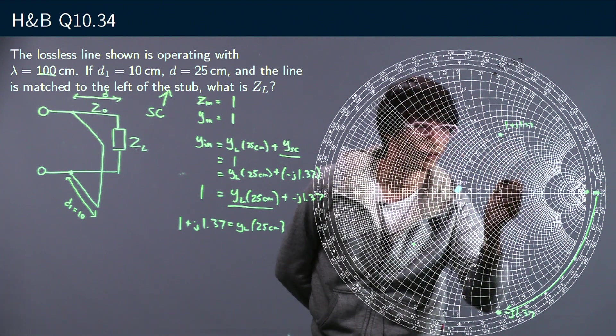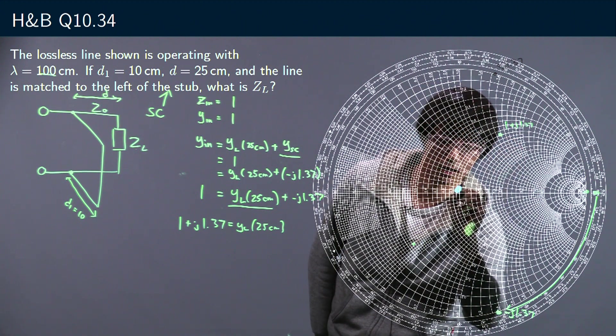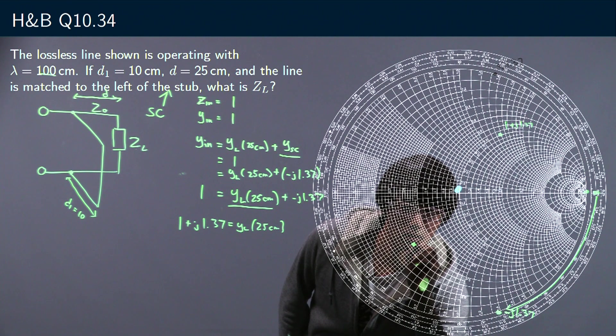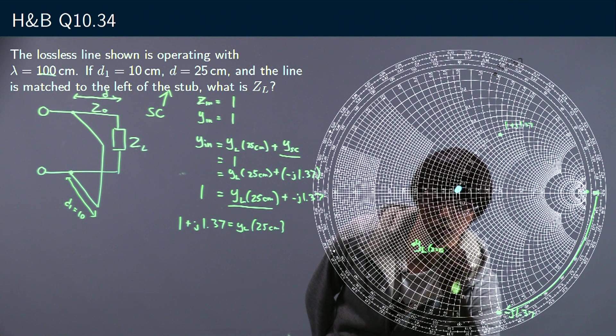So what we're going to do is instead of actually drawing that, I'm going to just rotate it around this center axis here. And so that gets us somewhere around here. YL at the load at z equals zero is equal to one.